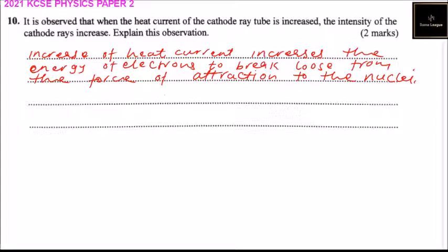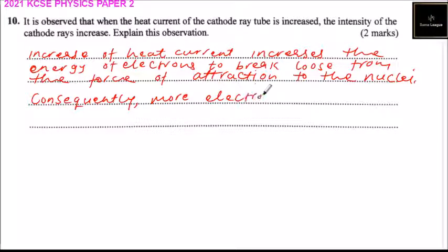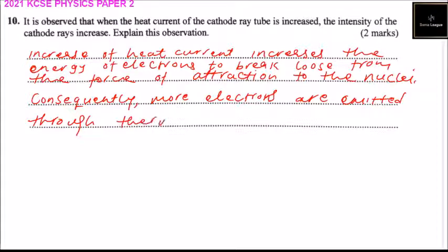So as a result, more electrons are emitted through the thermionic emission, increasing the intensity of the cathode ray.